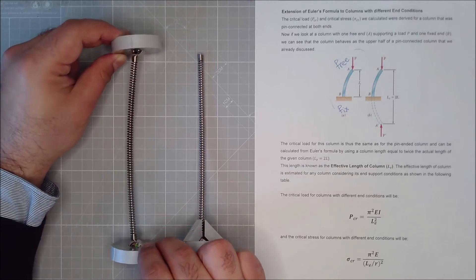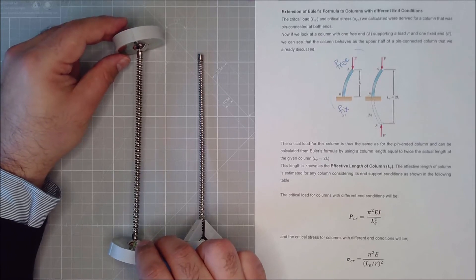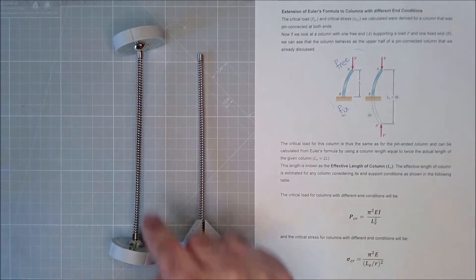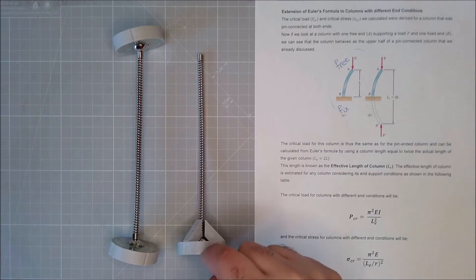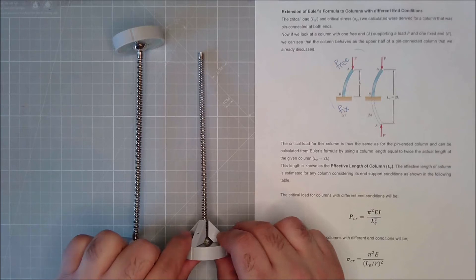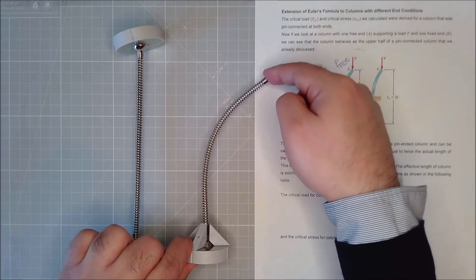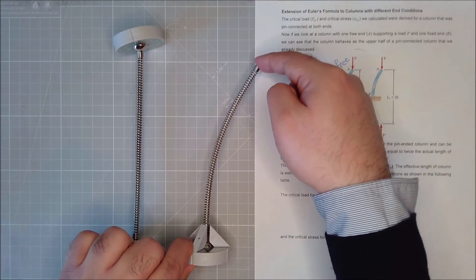But what happens if my connection ends, or end conditions changes? Now I have a fixed end with a free end. What happens here? Do I still get the same bending? No.